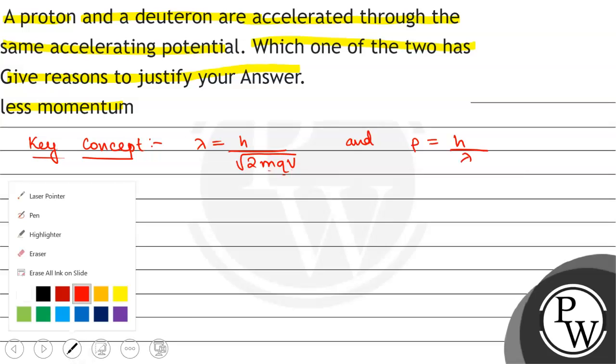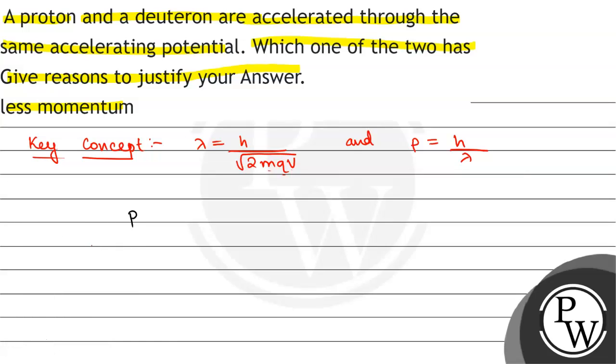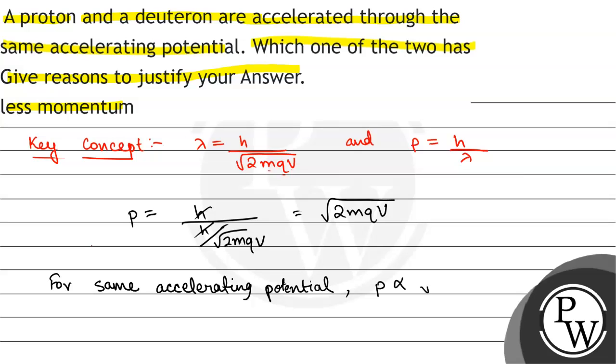So from these two relations, momentum will be equal to h by lambda. We put the value: h by root under 2mQV. So h cancels. This will be equal to root under 2mQV. Now, for same accelerating potential, V is constant. So we will have p is directly proportional to momentum is directly proportional to root under mass into charge.